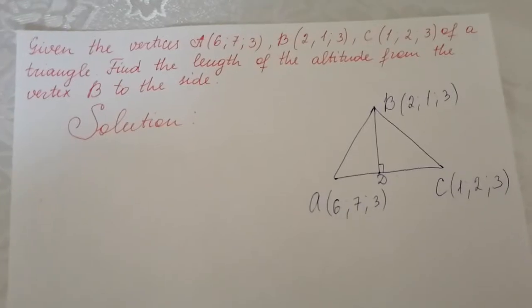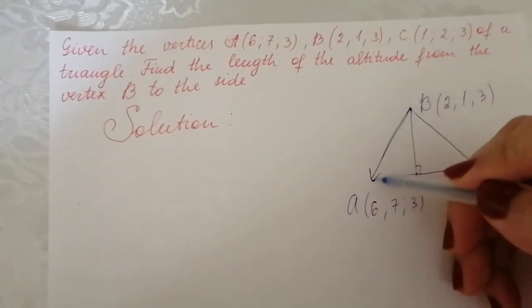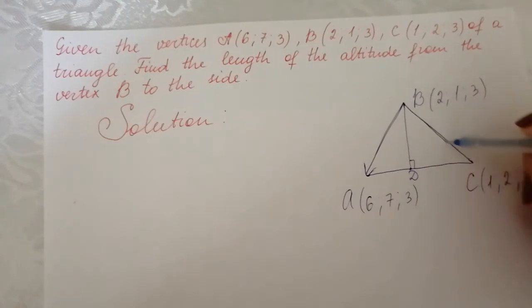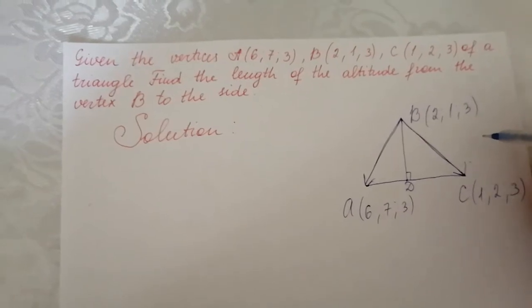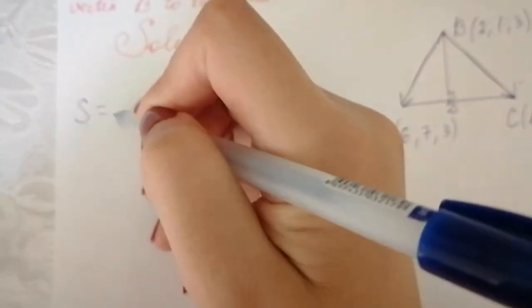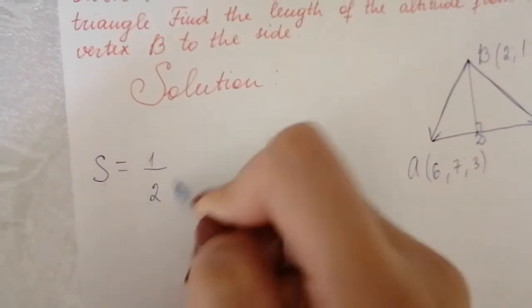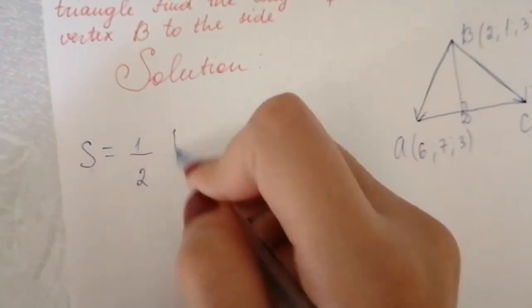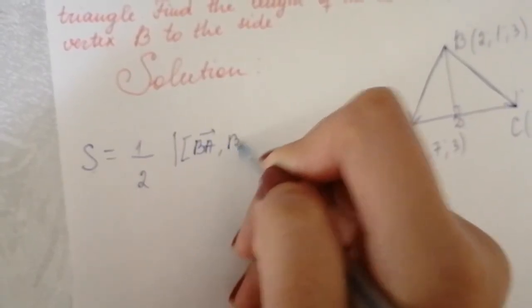Vectors BA and BC form the triangle. The area of this triangle can be found by this formula: S is equal to one half times the absolute value of the vector product of vectors BA and BC.